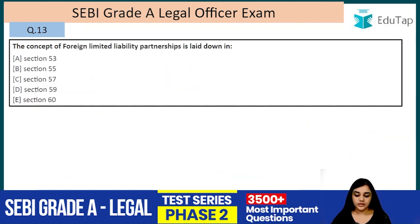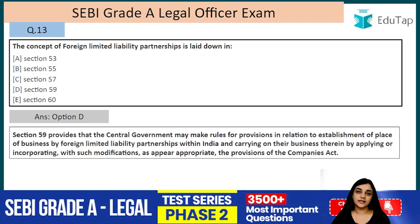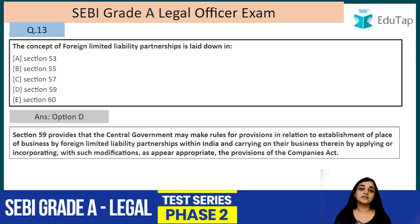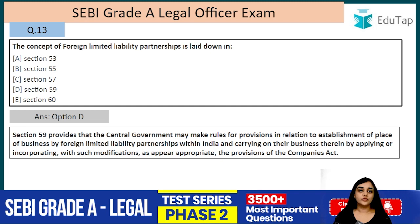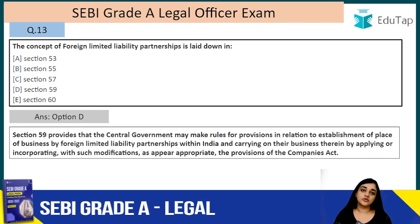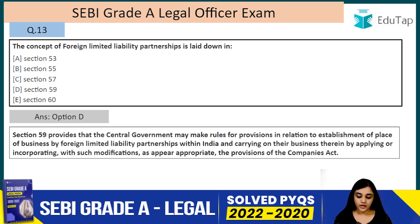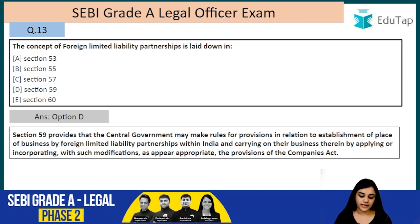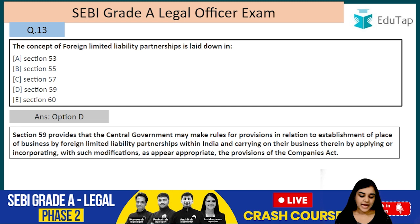Question number thirteen: the concept of foreign limited liability partnership is laid down in — the answer is option D, section 59. A foreign LLP is one incorporated outside India but carrying on business within India. A foreign LLP can also become a partner in an Indian LLP. Section 59 provides that the central government may make rules for the establishment of a place of business by the foreign LLP within India, by applying with modifications the provisions of the Companies Act.